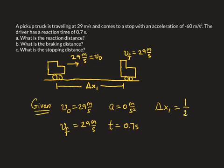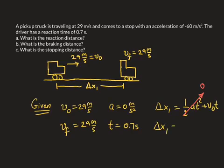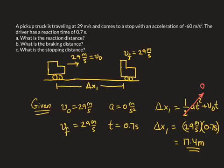We have an equation for delta x — this is the second kinematics equation: one half a·t² plus v_initial·t. We know that the acceleration in that stage is 0, so that first term just drops out. So we have delta x1, our reaction distance, equals v₀ — which is our initial velocity, 29 meters per second — multiplied by 0.7 seconds. So we get 17.4 meters. The car will have traveled 17.4 meters before the person even applies the brakes.